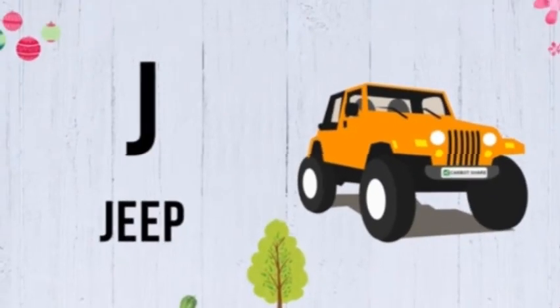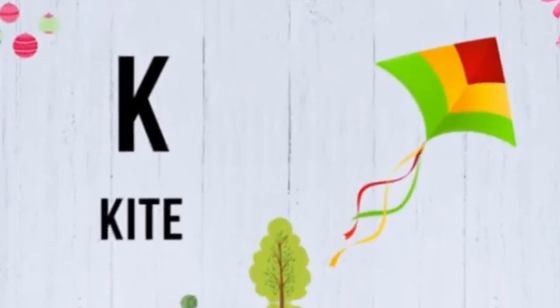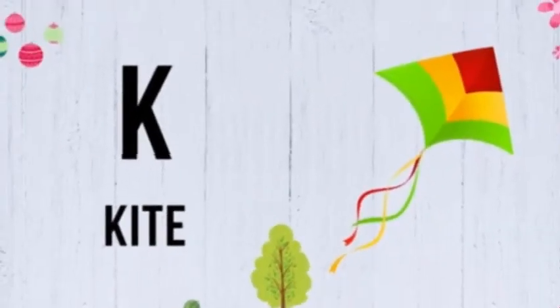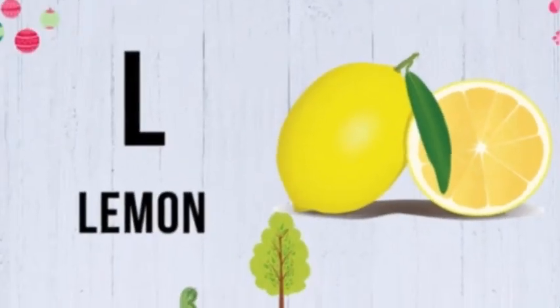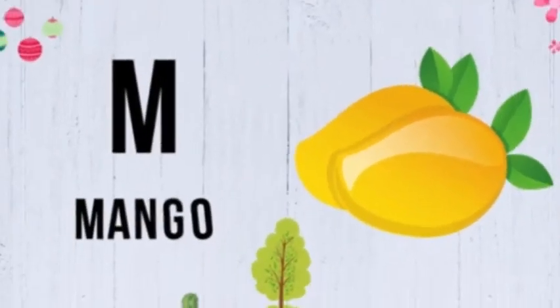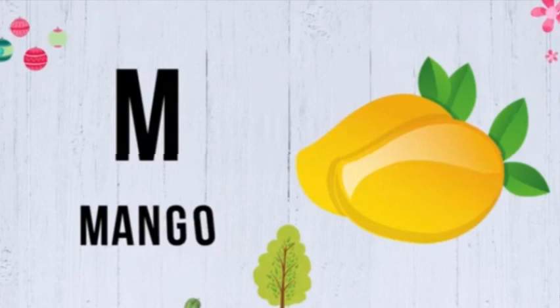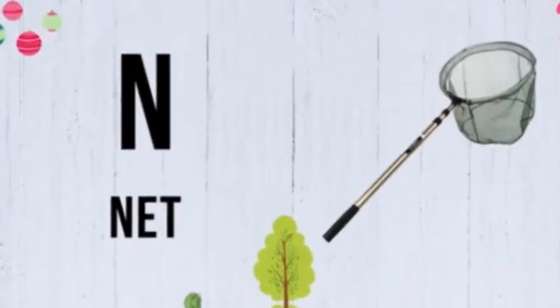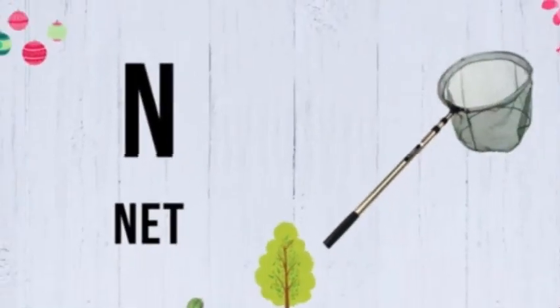I for ice cream, J for jeep, K for kite, L for lemon, M for mango.